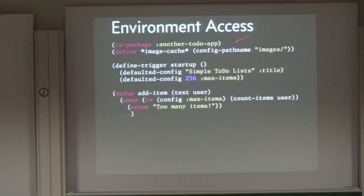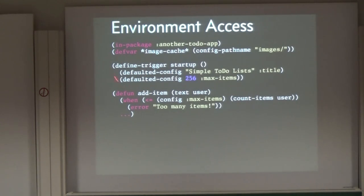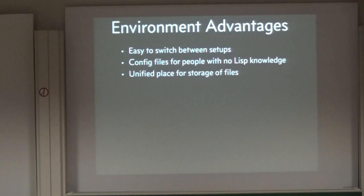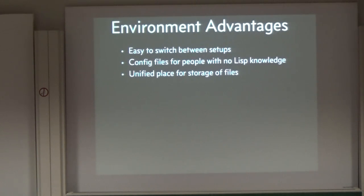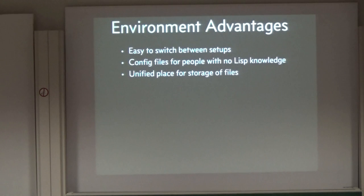You can also use the environment for your own purposes — for example, if you have an image cache, you can use it to figure out where to store all those files so they're easily trackable and manageable through the framework. You can define parameters that you can configure and refer to in your code. Because everything is contained under a single environment name, you can switch between setups very easily. You can have an environment for development and one for production, and simply start it up with a different environment name and have all the production settings applied. It has human-readable configuration files for people with no Lisp knowledge, and it unifies file storage so if you need to back up, you just have one common location.